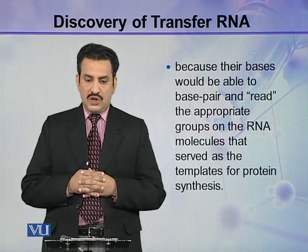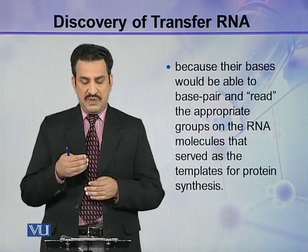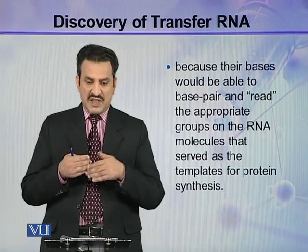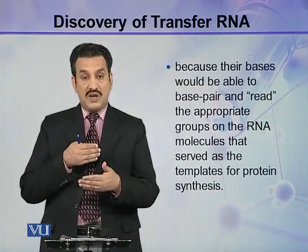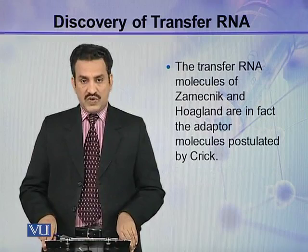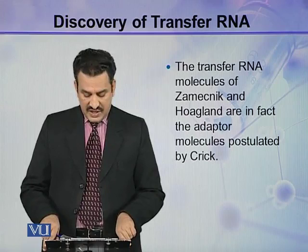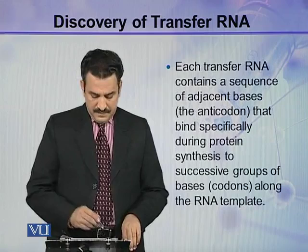On the tRNA, there are some specific bases present, and these bases can read compatible bases on the mRNA or template RNA, and they can base pair with these template RNA bases. The transfer RNA molecules of Zamecnik and Hoagland are in fact the adapter molecules postulated by Crick.